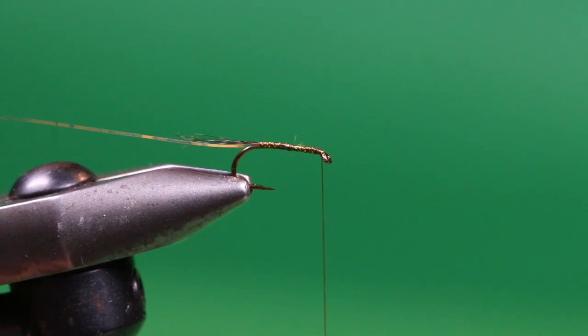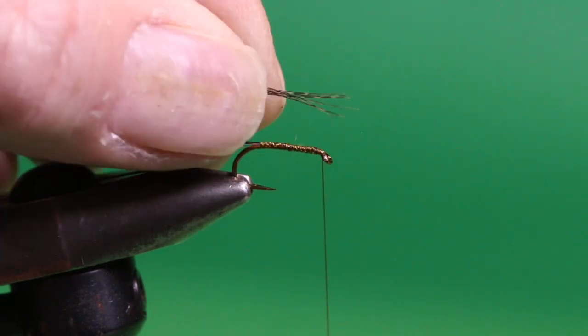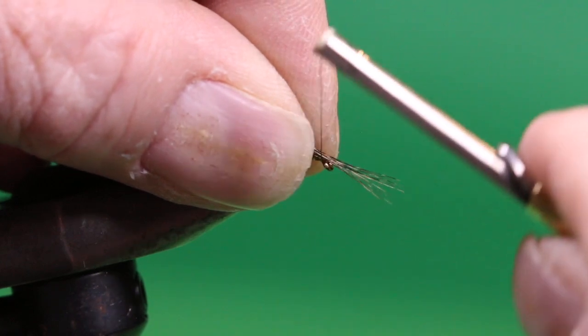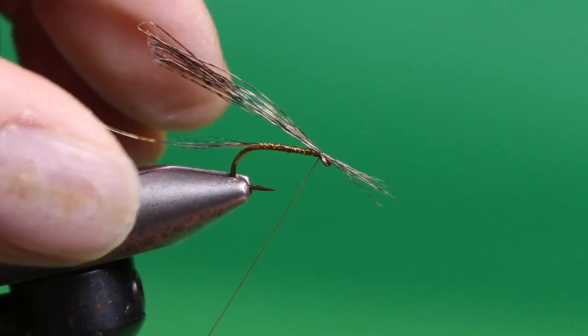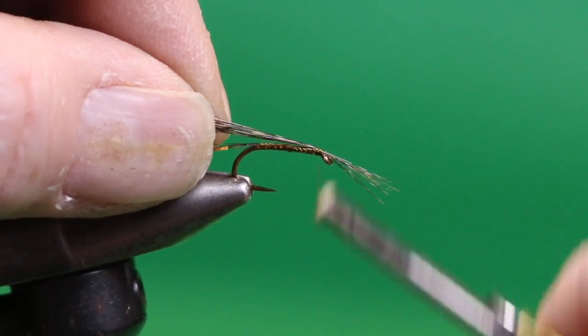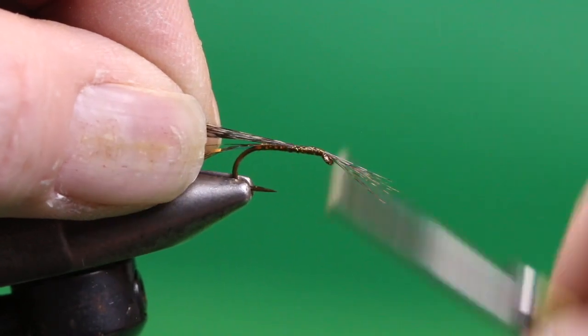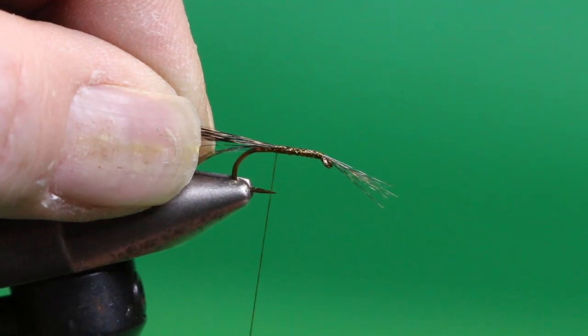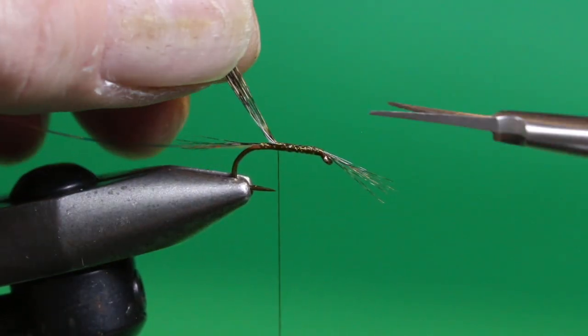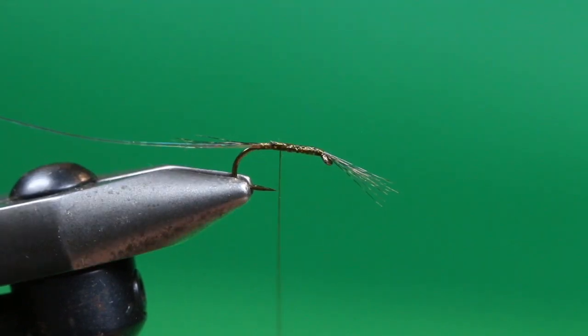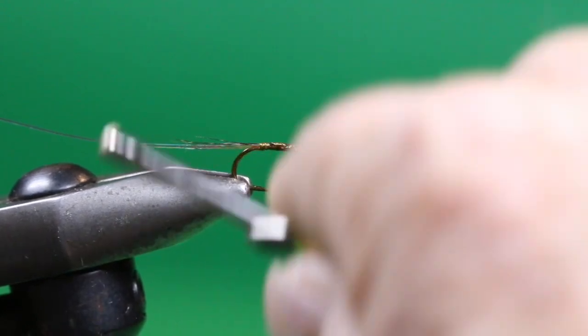I'm just going to place those onto the top of the shank here, so they're about half the shank length or three-quarters of the shank length long. Get them tied in place and secure those down the shank. When I get just past the hook point, I'm going to come in with my scissors and trim them on a bit of an angle, right down at the base of the tail.